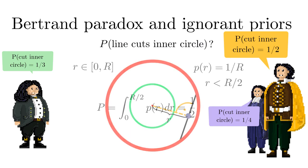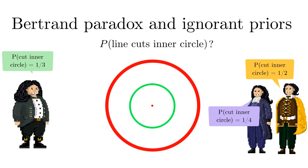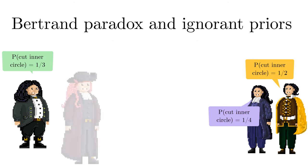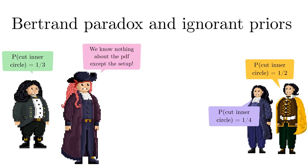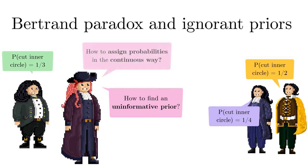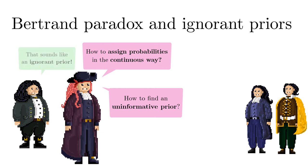The question is: which algorithm describes the physical experiment? This question has been on the minds of scientists for generations. We can phrase the problem more generally: if we know nothing about the PDF apart from the definition of the setup — no experimental data or additional theoretical constraints — what is the correct way to find an uninformative prior, also called an ignorant prior, in the continuous case?